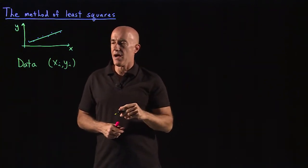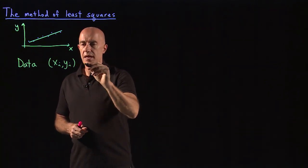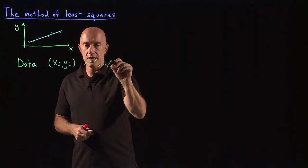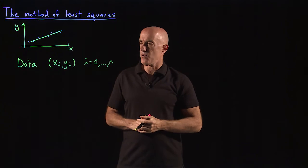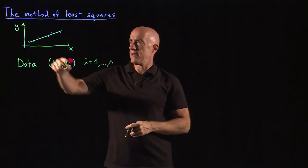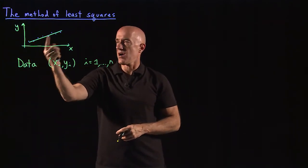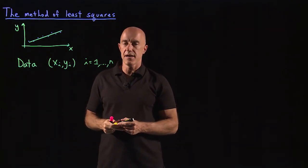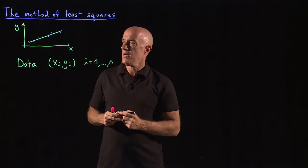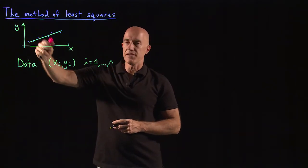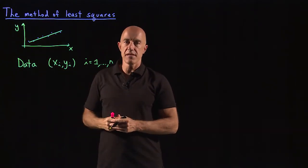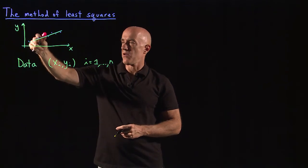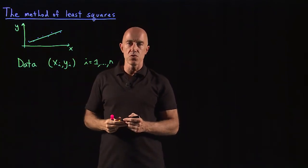The y_i are supposed to be noisy, where i equals 1 to N, so we have N data points. The x's are the known independent variables, and the y's are the measurements — the dependent variables. From an experiment, they typically come out with some noise in them.